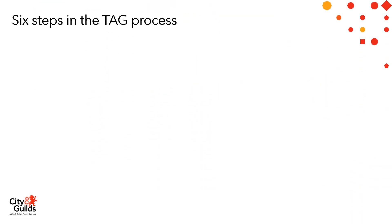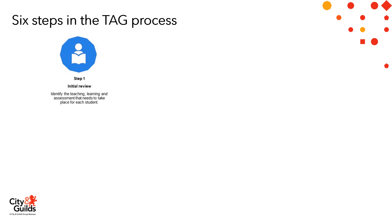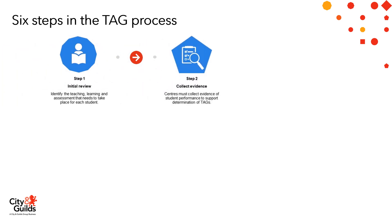There are six steps in the TAG process. Step 1: Initial Review – identify the teaching, learning and assessment that needs to take place for each student. Step 2: Collect Evidence – centres must collect evidence of student performance to support the determination of TAGS.